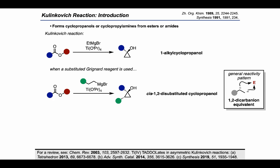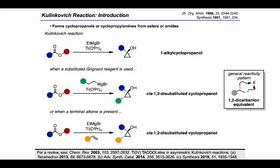Perhaps even more interestingly, when an alkene is present, that alkene can be incorporated into the product, which in this case is also a cis-disubstituted cyclopropanol. In fact, this is the type of reactivity that leads to the key annulation in the Micelizio synthesis of anhydrorianidol, which we saw in episode 38.